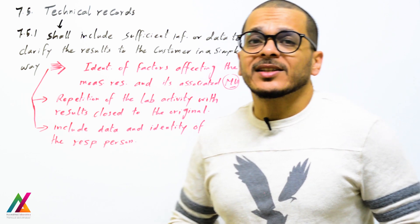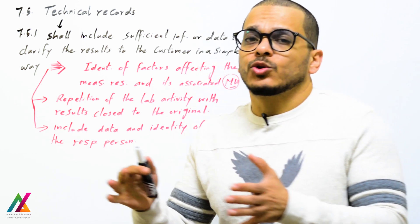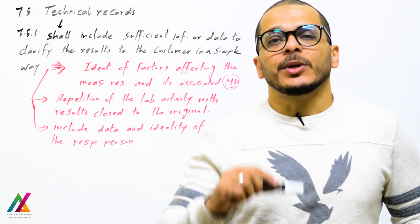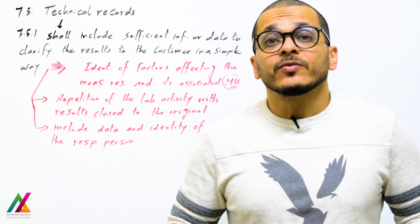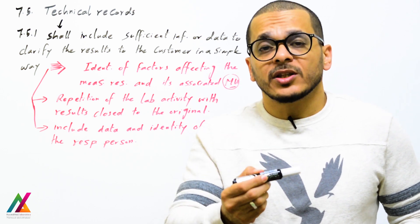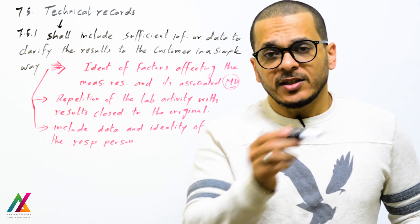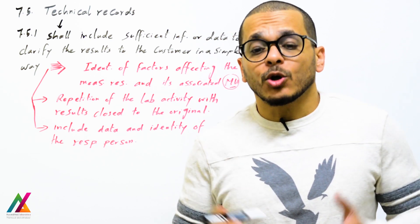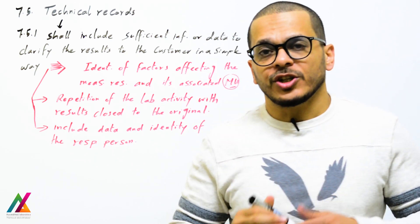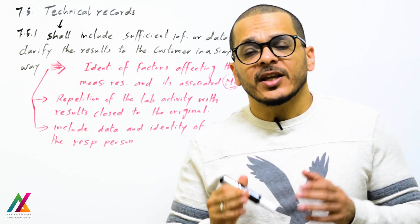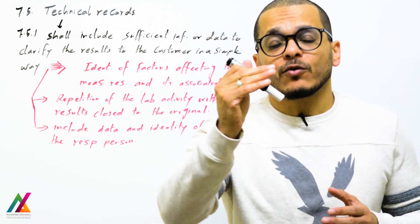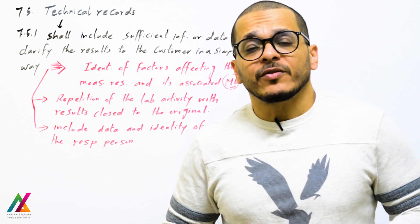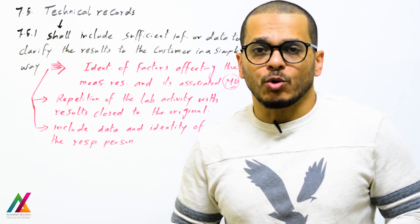The lab shall enable repetition of the lab activity with results close to the original. During your validation or verification, you will make repeatability replicate analysis of samples spiked with a known concentration of your target analytes. If you get low standard deviation, your replicate results are close together and close to the original. If you get high standard deviation, your results are far from each other. Your validation or verification report is also a technical record.